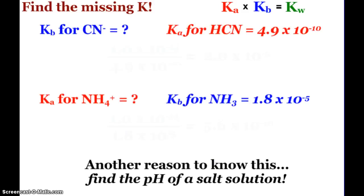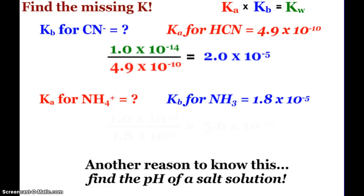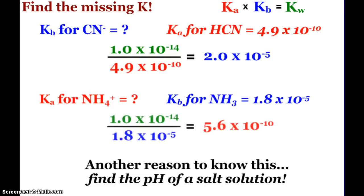HCN is a weak acid. I'll typically find the Ka value for HCN on a table — 4.9×10⁻¹⁰ — but I typically will not find a Kb value for the cyanide ion, even though it is the conjugate base of HCN. So I take Kw divided by Ka to get Kb for cyanide. Similarly, for ammonia I can find Kb on a table, but not Ka for ammonium. If I need that, I take Kw divided by Kb to get Ka.